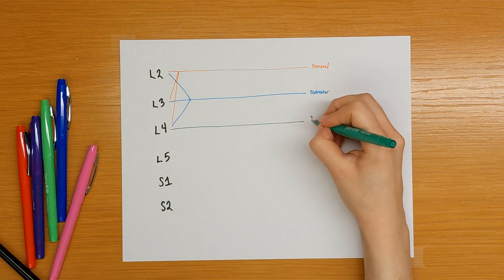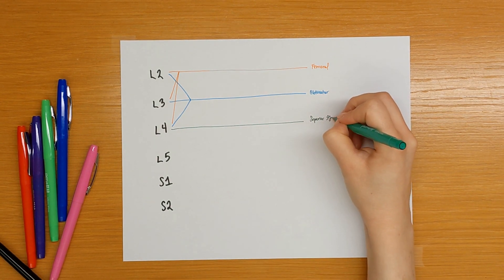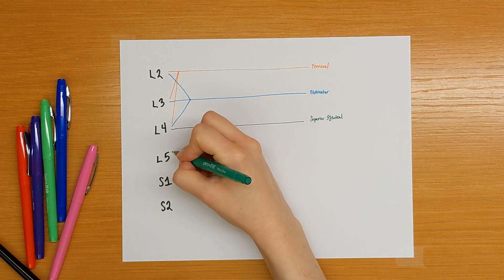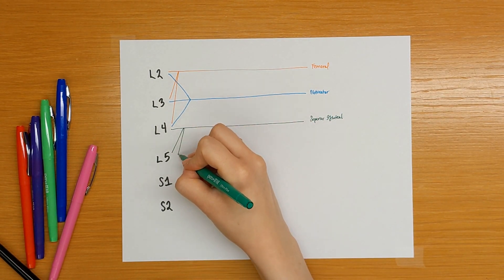The superior gluteal nerve gets contributions from L4, L5, and S1.